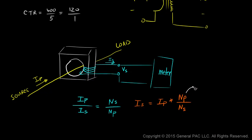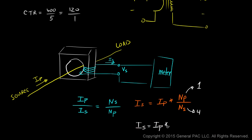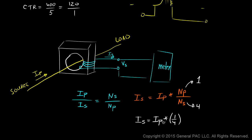The number of primary turns is simply 1, because the conductor goes directly through the transformer — essentially one turn. The number of secondary turns is 1, 2, 3, 4 — so four turns. Therefore, secondary current equals primary current times 1/4, meaning the secondary current is one-fourth of the primary current.